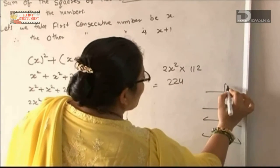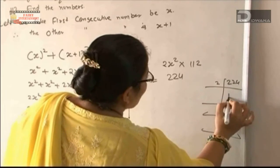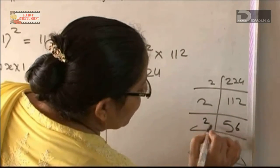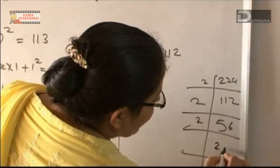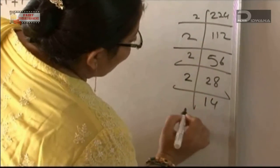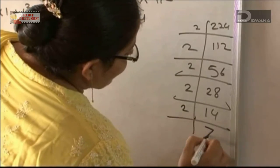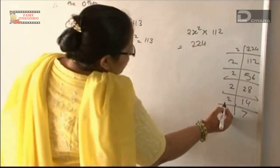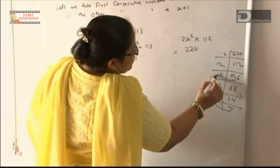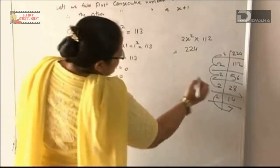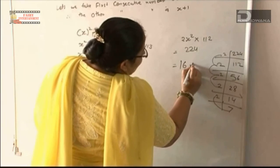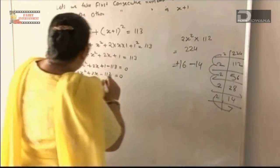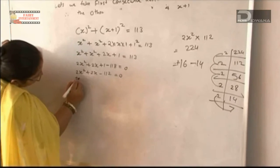We need two numbers whose product is 224 and whose sum gives us the middle term. Those numbers are 16 and minus 14: 16 multiplied by minus 14 gives minus 224, and 16 plus minus 14 equals plus 2. So we take plus 16x and minus 14x.